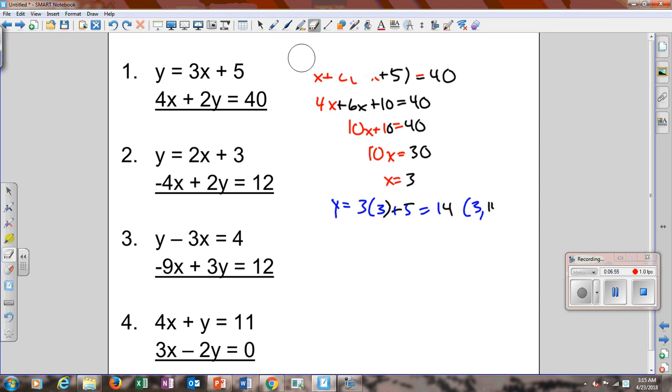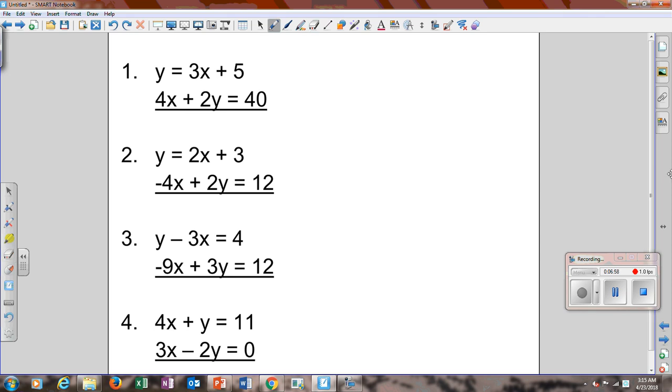On to the next one. Take the 2x plus 3. Plug it in here. So you do negative 4x plus 2 times 2x plus 3 equals 12. Distribute the 2. You get negative 4x plus 4x plus 6 equals 12. Now your negative 4x and your 4x cancel. You have 6 equals 12. When does 6 equal 12? Never. So it's no solution.